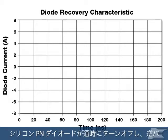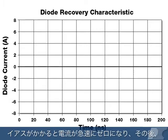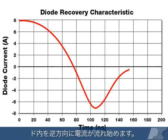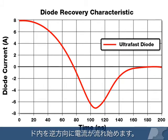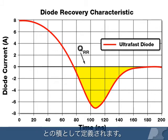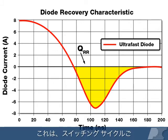When a silicon PN diode is turned off during conduction and reverse biased, the current falls rapidly to zero and then begins flowing backwards through the diode as it recovers from forward conduction. The product of negative current and time is defined as reverse recovery charge, or QRR. This is the energy lost on every switching cycle.